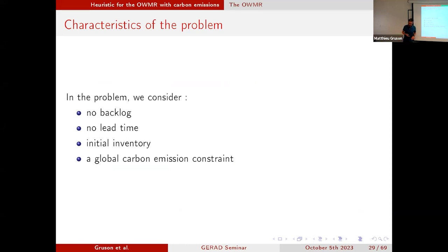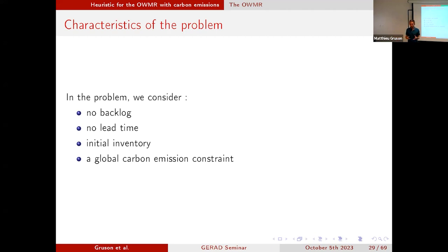In the problem, we consider no lead time, no backlog, some initial inventory available at the retailer level, and a global carbon emission constraint. The global carbon emission constraint means we look at all the emissions from setup decisions and inventory decisions, and consider that we cannot go beyond a certain threshold over the whole time horizon.